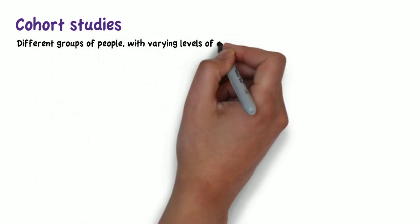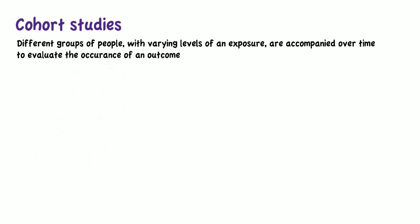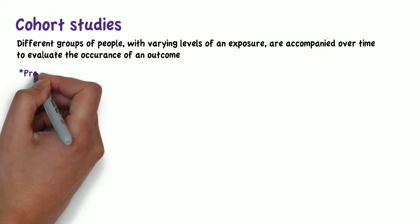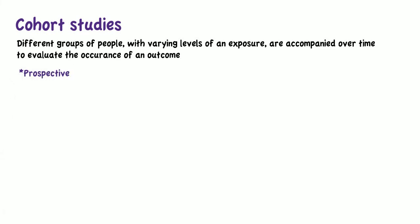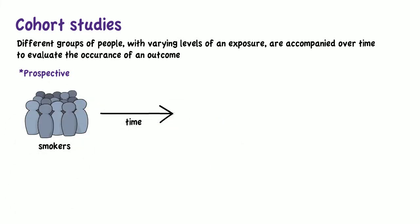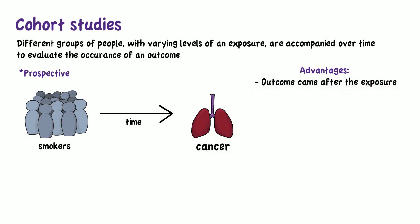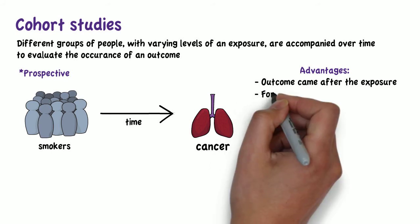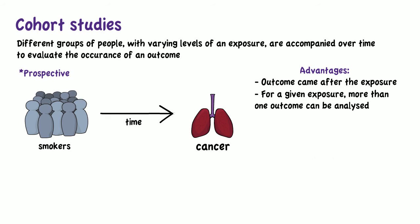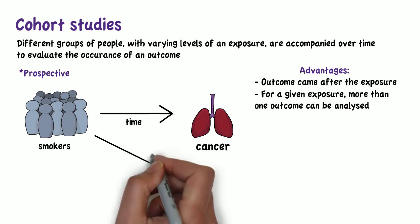In cohort studies, different groups of people with varying levels of exposure are followed over time to evaluate the occurrence of an outcome. Cohort studies are prospective — they observe what will happen in the future. An example is following a group of smokers over time to evaluate the occurrence of lung cancer. The advantages are that you can establish that the outcome came after the exposure, suggesting possible causality. Also, for a given exposure, more than one outcome can be analyzed — for example, the effect of smoking on lung cancer and on cardiovascular disease.